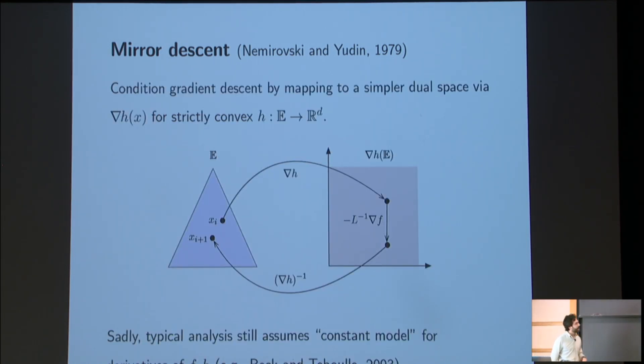The basic idea behind mirror descent, and I'm not going to write the iteration, is that we can condition a gradient descent algorithm by mapping to a simpler dual space via some gradient map of some strictly convex function H that we design. Where in the dual space, we can apply a gradient map that is then conditioned in that space. And then by mapping back with the inverse of the gradient map of H, we get the mirror descent algorithm, which you can argue in some cases, conditions our iteration to the sort of geometry of our original set.